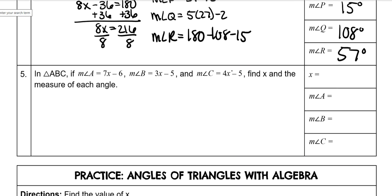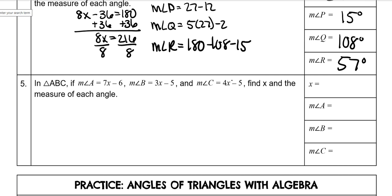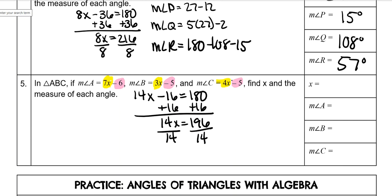And then again, they give you all the angle measures. You do the same thing. 7x plus 3x is 10x plus another 4x is 14x. Negative 6 minus 5 is negative 11 minus another 5 is negative 16 is equal to 180. Add 16 to both sides and you have 14x is equal to 196. Divide both sides by 14 and x is 14.